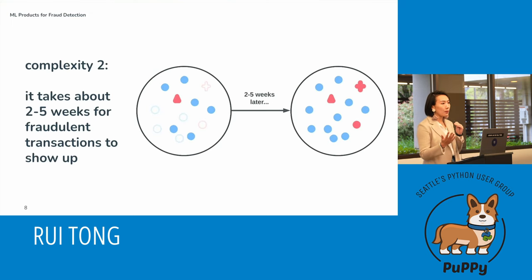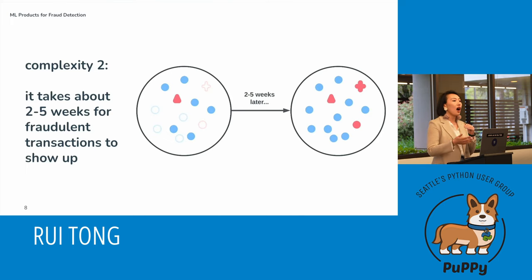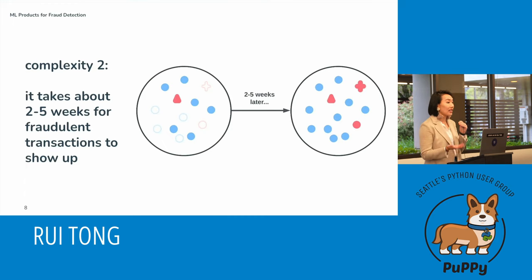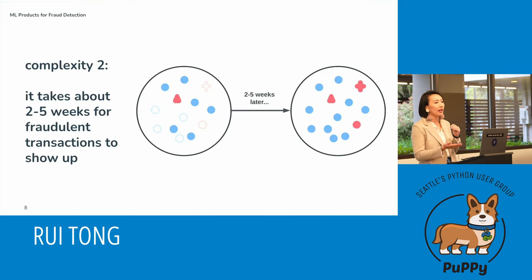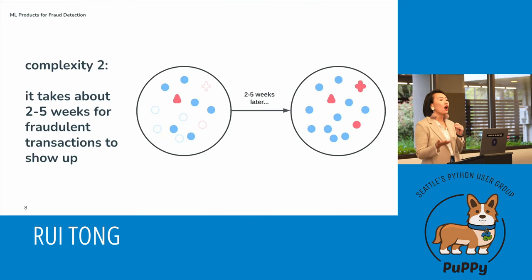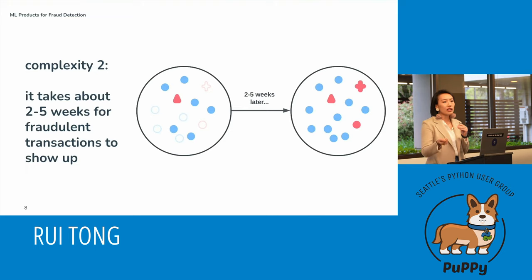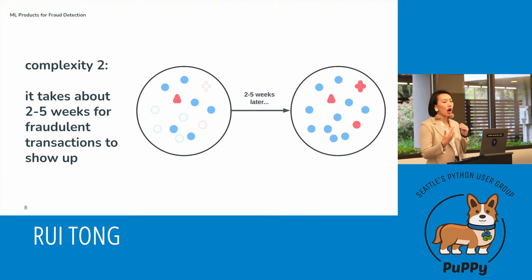Complexity number two: it takes about two to five weeks for fraudulent transactions to show up on any fintech platform's ledger. Why? If you think about it, I don't check my bill statement every day — maybe every month. By the time I realize there are unauthorized transactions on my account, a few weeks have already passed. So I have to report to the bank: you need to reimburse me because this was not an authorized transaction.